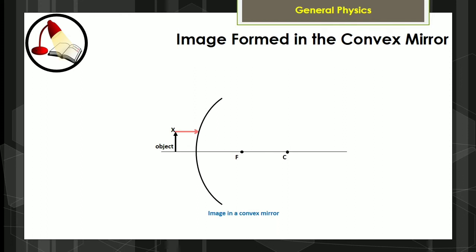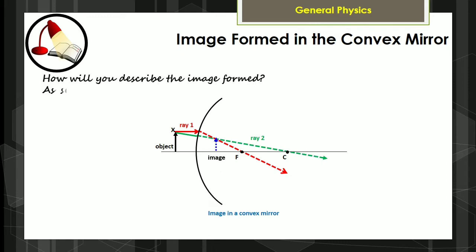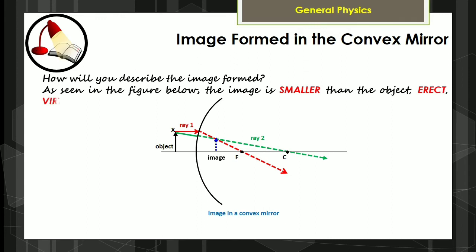Now that we have seen some examples of image formation in a concave mirror, what about the image formed in the convex mirror? As seen in the figure below, the image is smaller than the object, erect, virtual, and located behind the mirror.